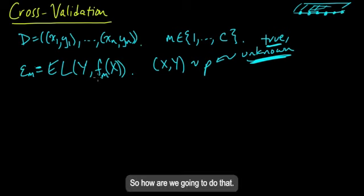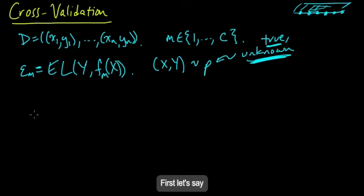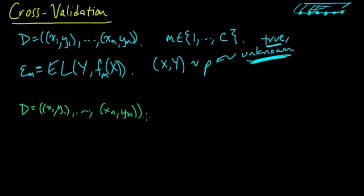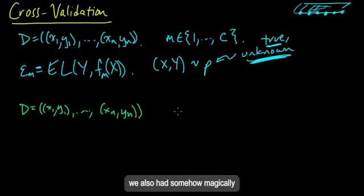Because that's what we really want to minimize our expected loss for, right? For the true thing. So how are we going to do that? Well, let's do a little thought experiment first. Let's say we had our data here. Let's rewrite it again: X1, Y1 up to XN, YN.